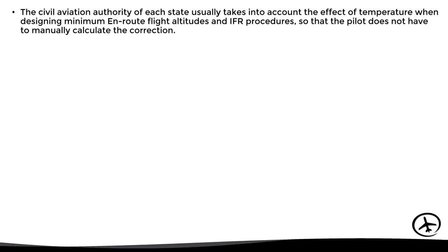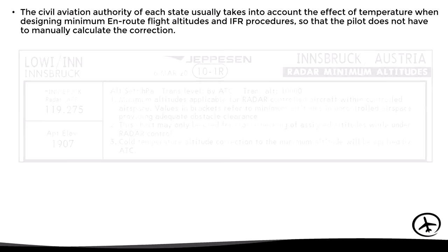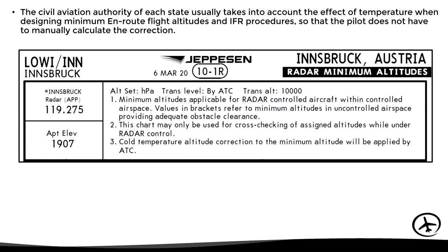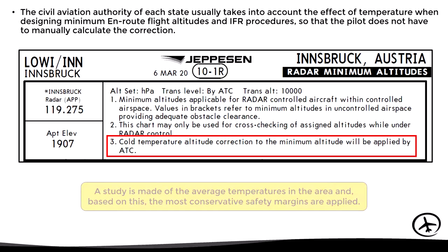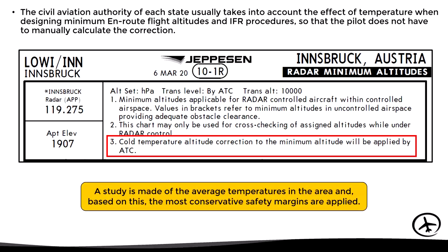On the other hand, the civil aviation authority of each state usually takes into account the effect of temperature when establishing minimum flight altitudes, so that the pilot does not have to manually calculate the correction. Here we can see an example: a radar minimum altitudes chart for Innsbruck, Austria, which states that ATC will apply the cold temperature corrections when necessary and therefore the pilots don't have to worry about it. Normally this is done by surveying average temperatures in the area and applying the most conservative safety margins.